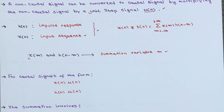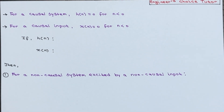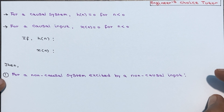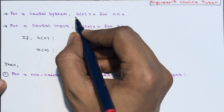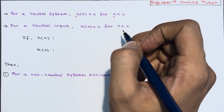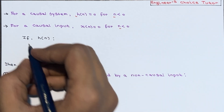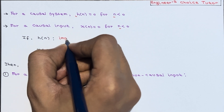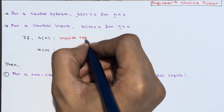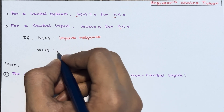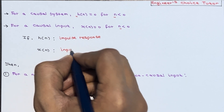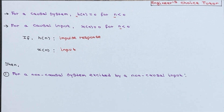Now let's derive the different formulas. For a causal system, h(n) should be 0 for n less than 0. For a causal input, x(n) should be 0 for n less than 0. The limits in the convolution sum can be adjusted based on the type of sequence and system.